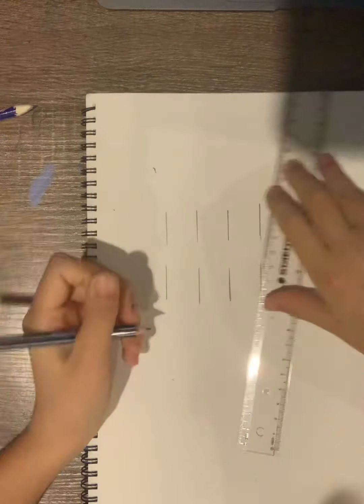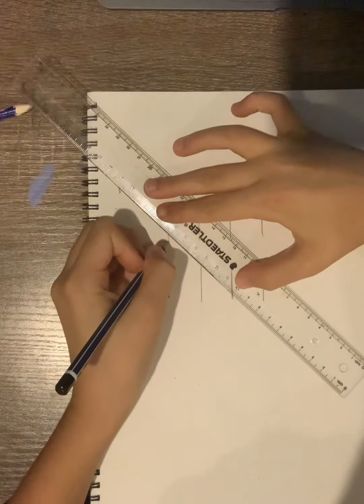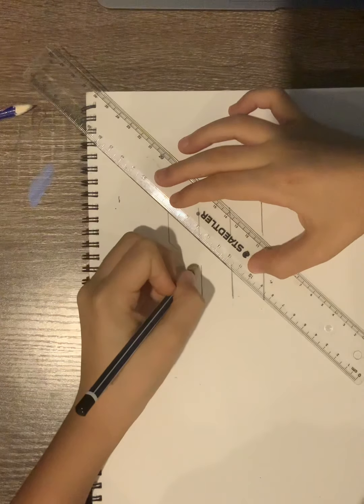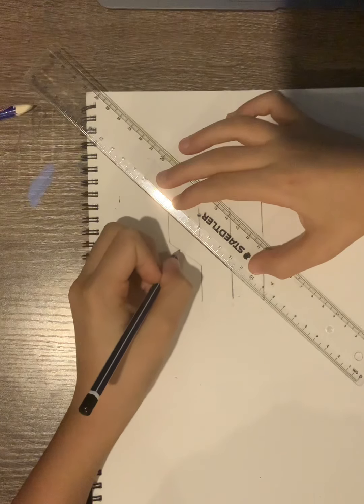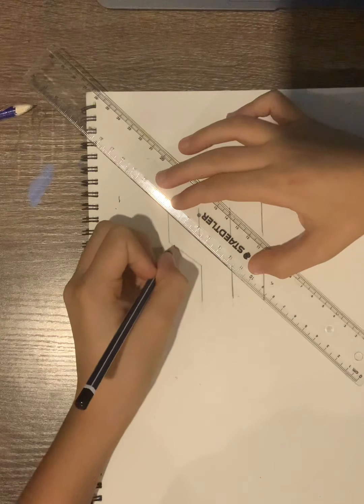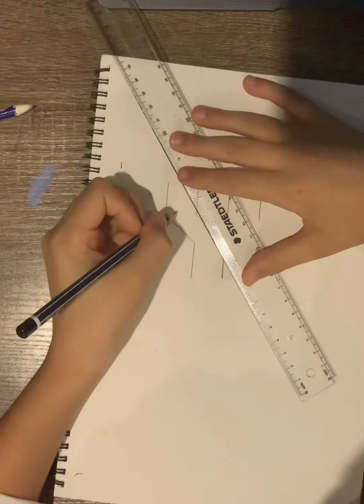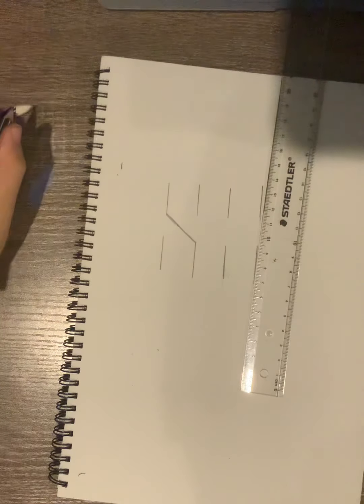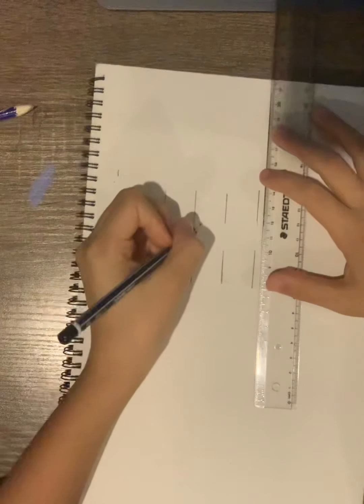Now we want to make a line from here to one of this, to this side. Just lightly draw light till it's right. So there we go. Now we will want to draw another line.